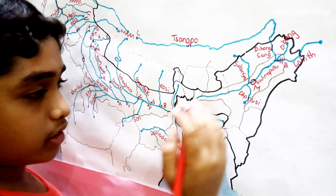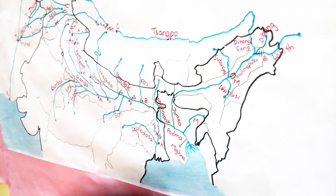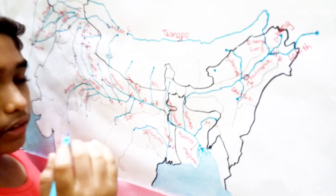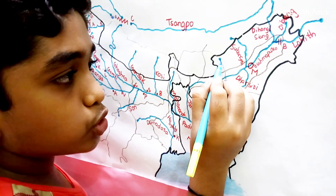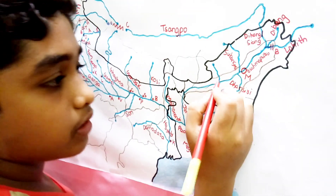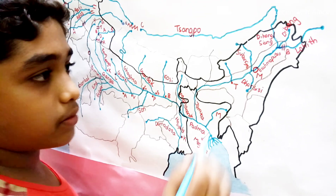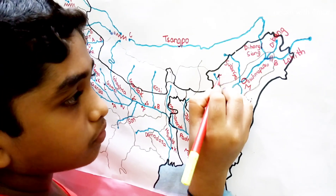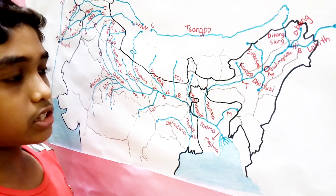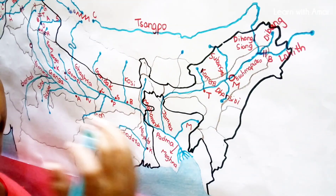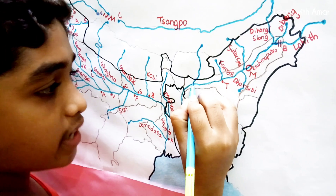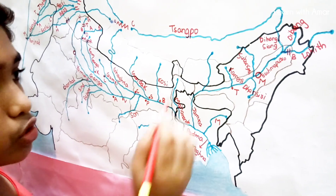The next Right Bank tributary originates in Arunachal Pradesh, flows through Arunachal Pradesh, then enters Assam, and joins the Brahmaputra at Tezpur. This is the Kameng River. The next river, Manas, has its source in Tibet. It flows through Tibet and enters Bhutan, making it the longest river in Bhutan. It then joins the Brahmaputra in Assam.